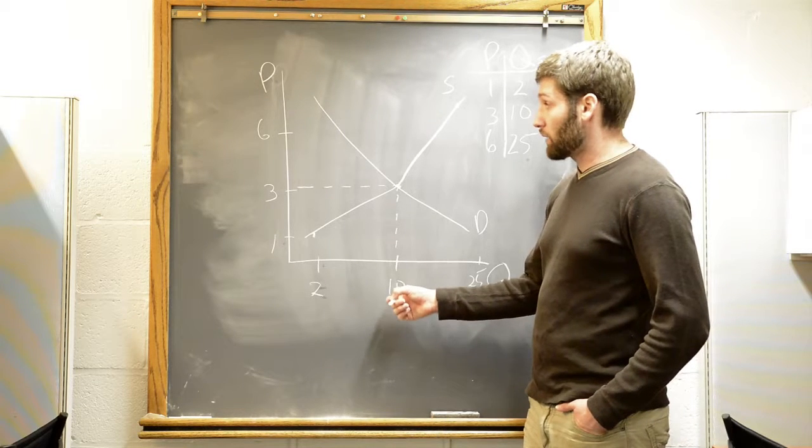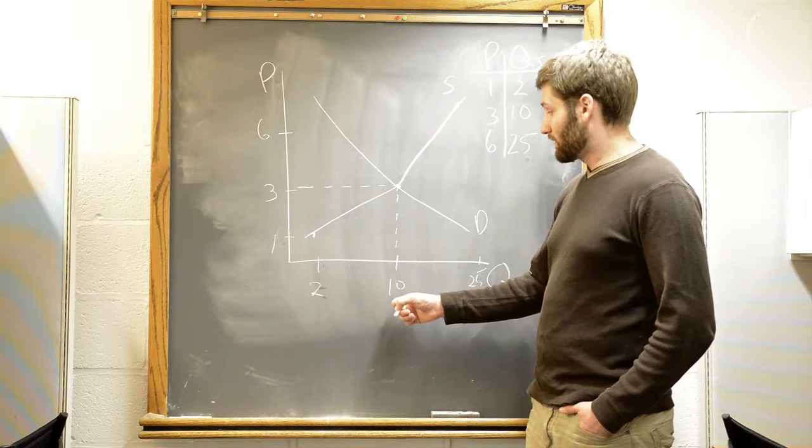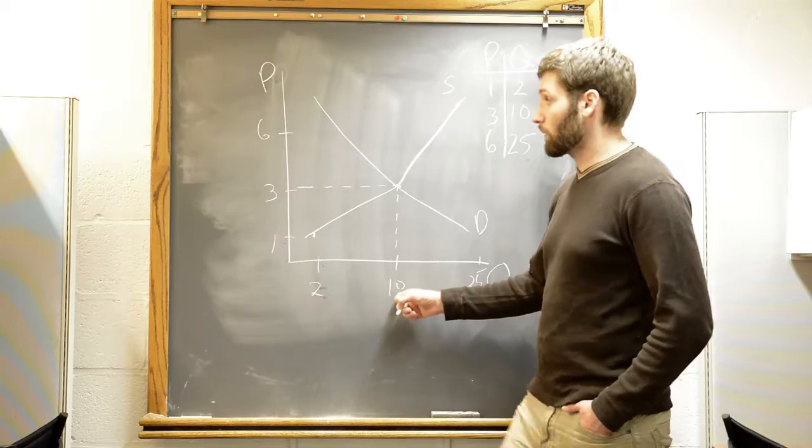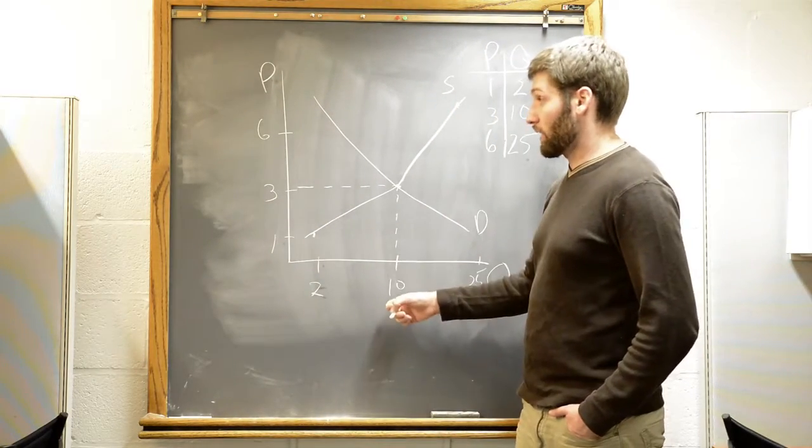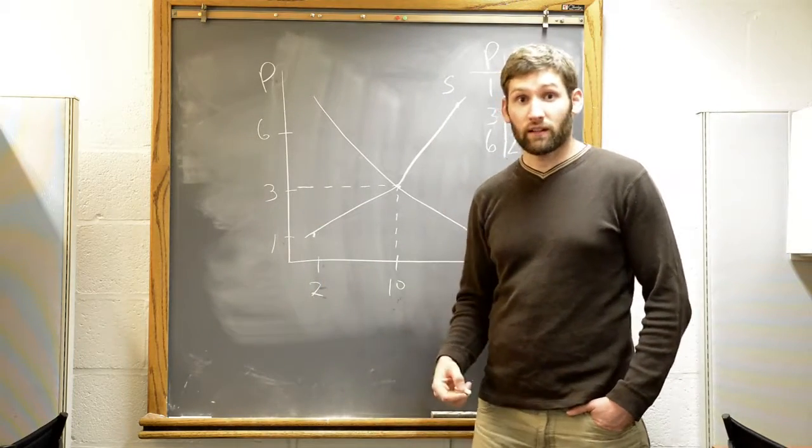So at $10, I'm willing, or sorry, when I'm buying 10 jars of jam, I'm willing to pay $3. In order to make 10 jars of jam, they require $3 to be paid. So here we end up at equilibrium.